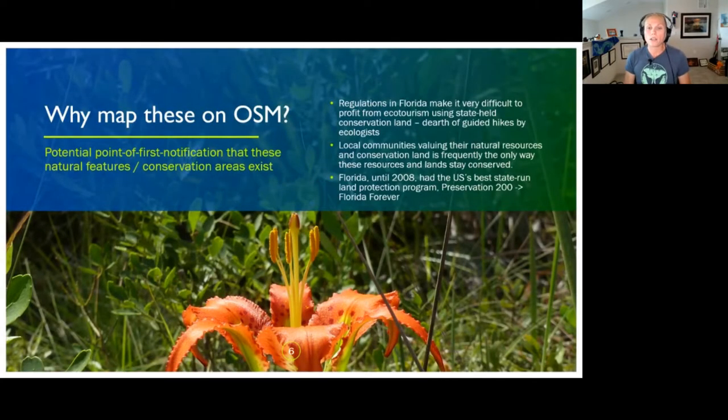Okay, so why map these in OSM in Florida? So for me, this is a potential point of first notification that these natural features of conservation areas exist. And regulations in Florida make it very difficult to profit from ecotourism using state-held conservation land. And so therefore, we just don't have a lot of guided hikes by ecologists. Local communities valuing their natural resources and conservation land is frequently the only way that these resources and lands stay conserved.